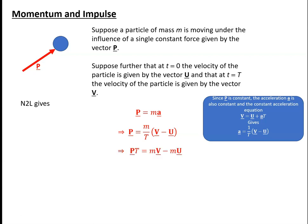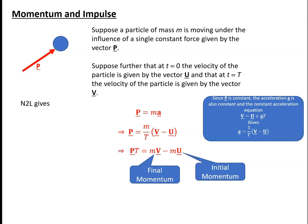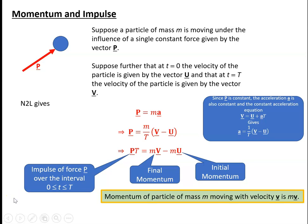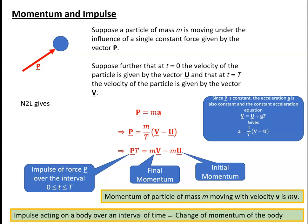In other words, p times t is m times v minus m times u. m times v is the final momentum of the particle, m times u is the initial momentum of the particle, and p times t is the impulse of the force over the interval of time of length t. So the momentum of a particle of mass m moving with velocity v is simply m times v, and the impulse acting on a body over an interval of time is equal to the change of momentum of the body.